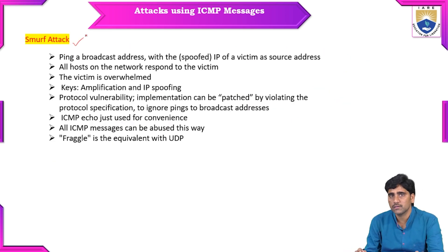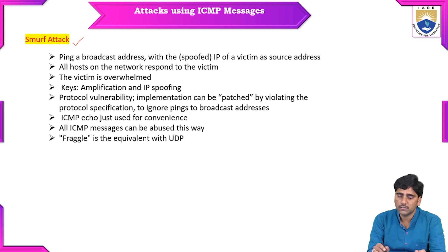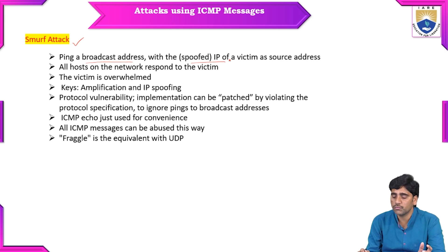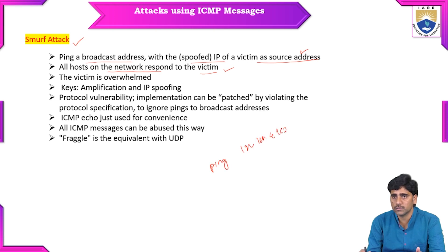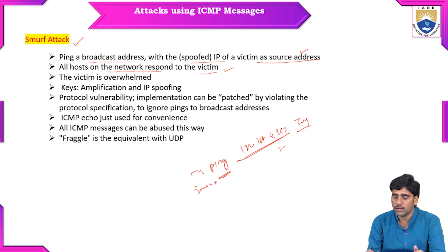The second type is smurf attacks. In a smurf attack, you ping a broadcast address using a spoofed IP — using the victim's IP as the source address — so all hosts on the network respond to this victim. For example, sending ping to 192.168.4.163 as the target address while using a spoofed source IP address.